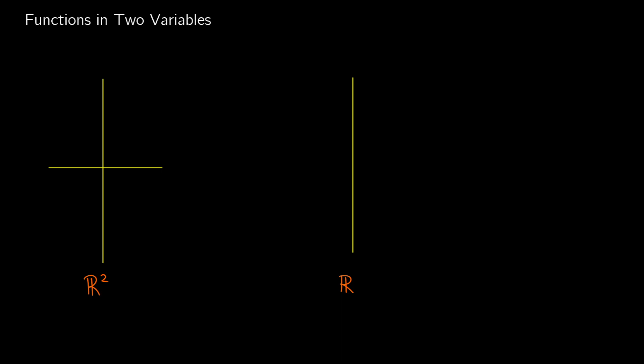In this video we'll talk about functions in two variables. This is when you have a function like f of x y and what you get is some number z out of it. So there are two independent variables, x and y, and they're being mapped onto some number z. You might see this written as a function from R squared to R — you're taking something from the x y plane and mapping it onto just a number line.